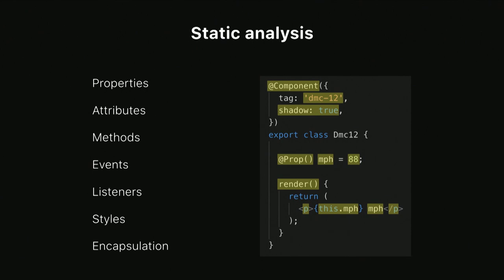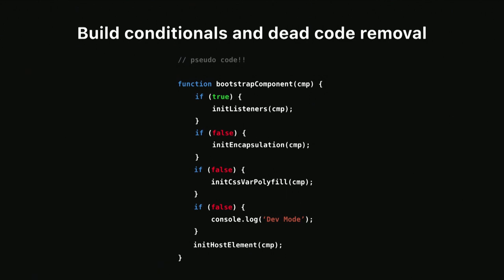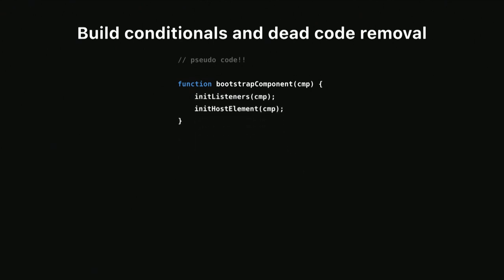TypeScript walks the AST of every single component and every single file. All of that information about each component is then used to customize the runtime to only what it needs. So it's more about what the component is not using — much of what would have been extra code simply is not even included in the component. One way we can reduce more runtime is by adding build conditionals. You may have seen this with production and development environments, but we can take it one step further using metadata that we've already gathered. By changing these values to true or false, our minifier can remove unused code.